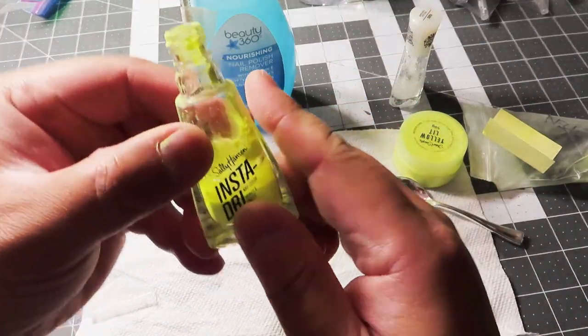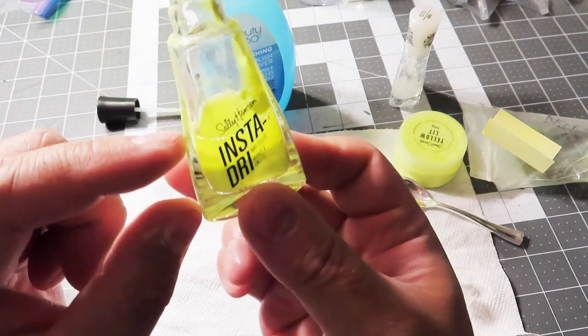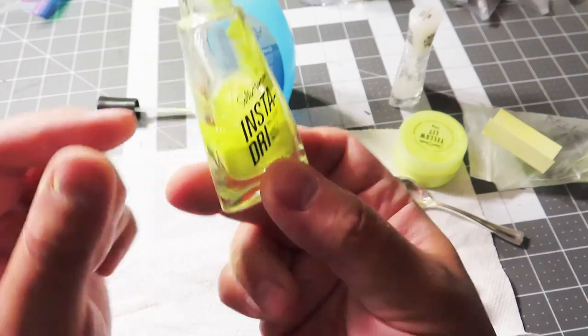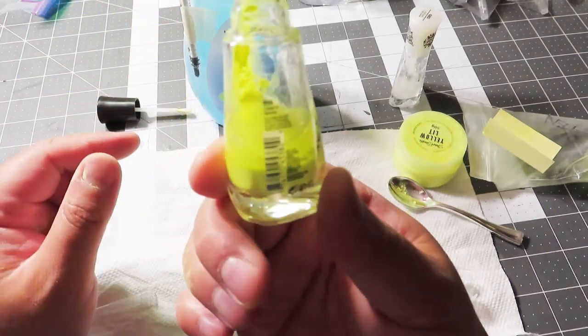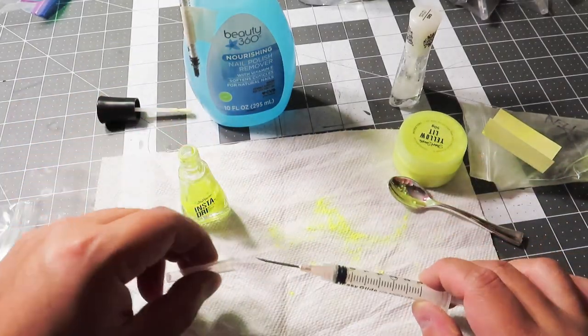We can tell the top one third is nail polish. Then it's powder. Then is the nail polish remover. So about one third, one third, one third. That's 33% each.